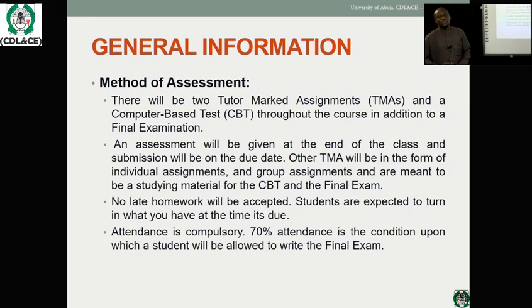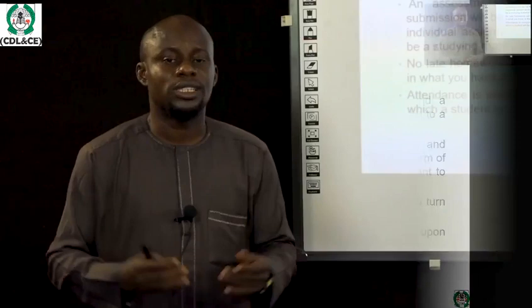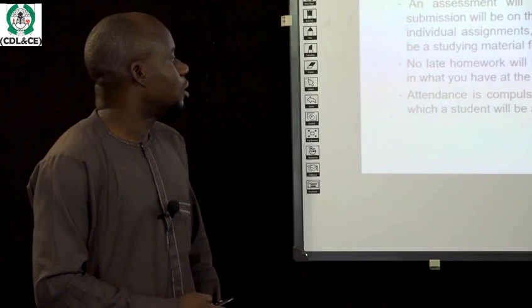Our mode of assessment: as students, it is expected of you to have a certain percentage of attendance in class. The university has its own regulation with respect to attendance, and if you don't meet that particular threshold, you will not be allowed to take your continuous assessment or even the final exam. The continuous assessment will form 30% of your final grade, while the remaining 70% comes from the final examination.